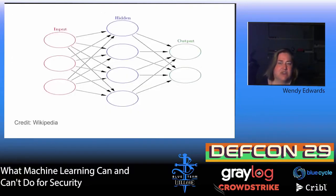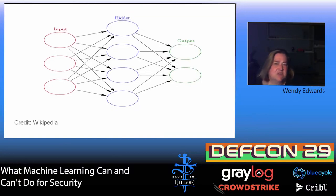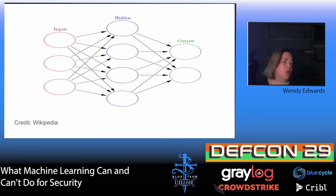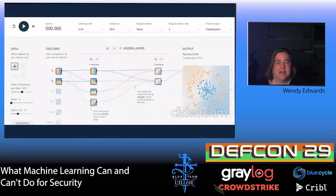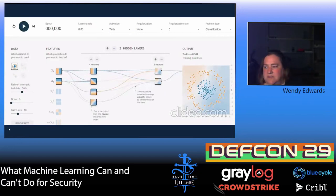Here we have a picture of a neural network. In this case it's what's called a feedforward neural network. You have an input layer, then you have — in this case — one hidden layer with four neurons, but you can have more or fewer neurons or more or fewer hidden layers. Then you have an output layer. Now we're going to look at some videos showing neural networks.